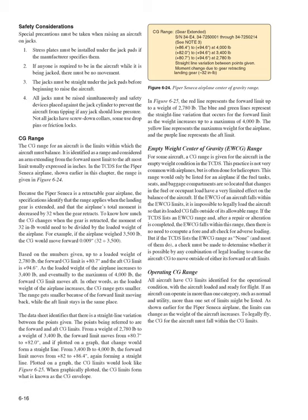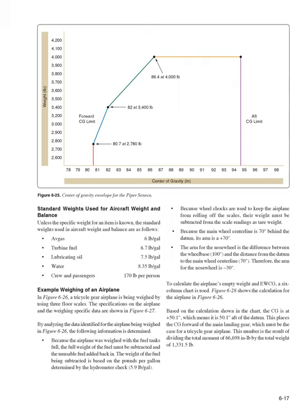Operating CG Range: All aircraft have CG limits identified for the operational condition—aircraft loaded and ready for flight. If an aircraft can operate in more than one category (such as normal and utility), more than one set of limits might be listed. As shown for the Piper Seneca, limits can change as aircraft weight increases. To legally fly, the CG must fall within the CG limits. Standard Weights: Unless specific weights are known, standard values used in aircraft weight and balance are: avgas 6 lb/gal, turbine fuel 6.7 lb/gal, lubricating oil 7.5 lb/gal, water 8.35 lb/gal, crew and passengers 170 pounds per person.